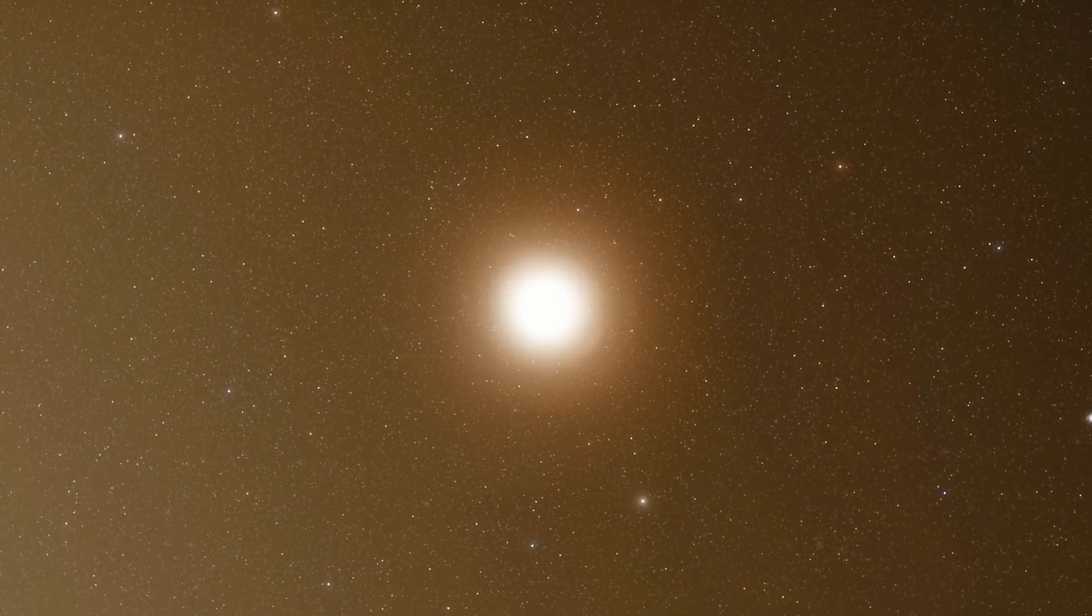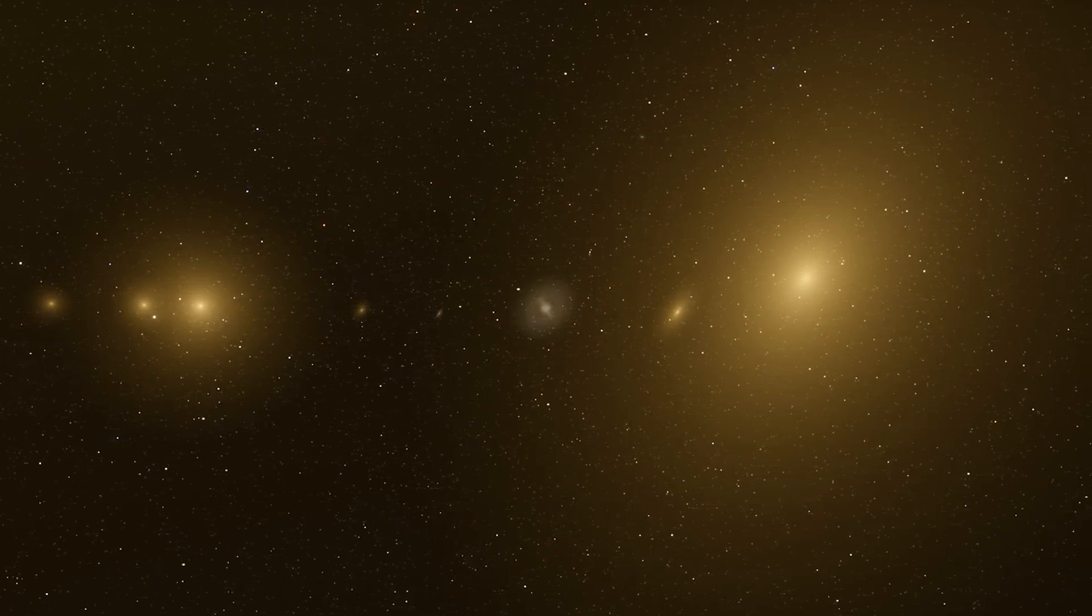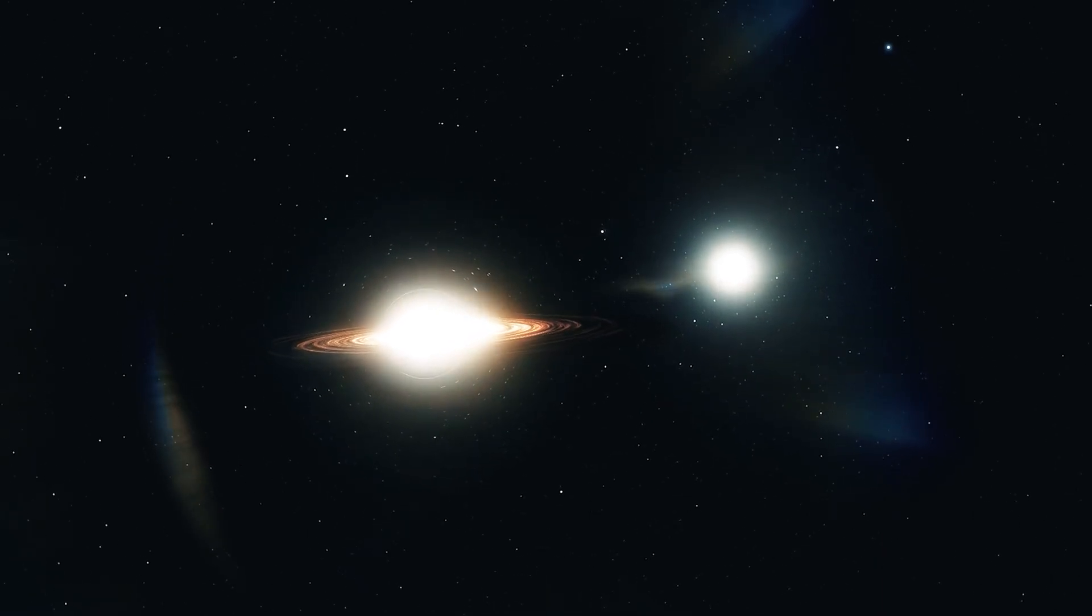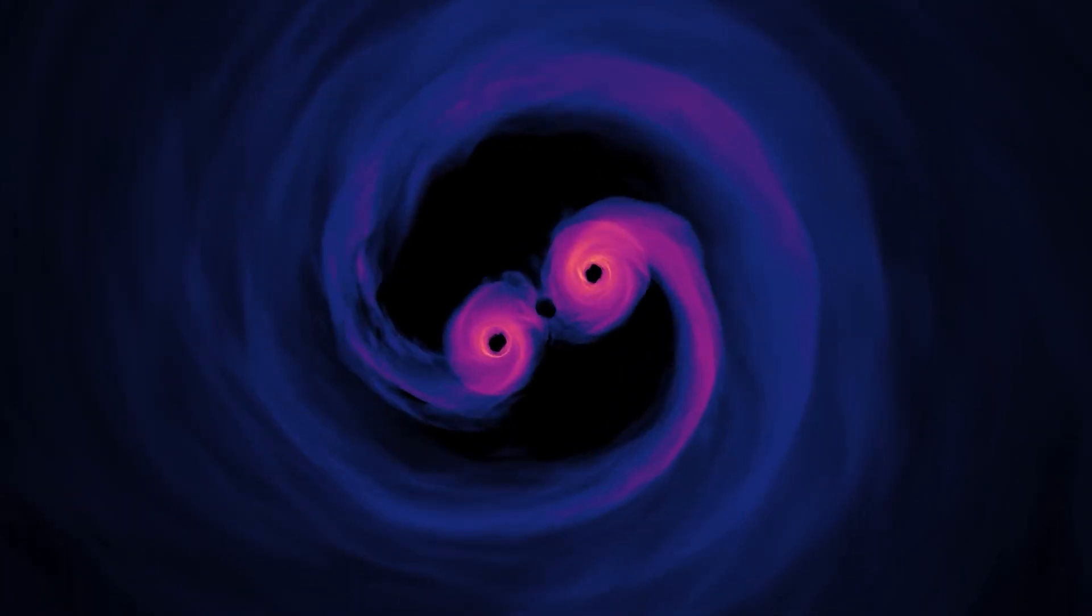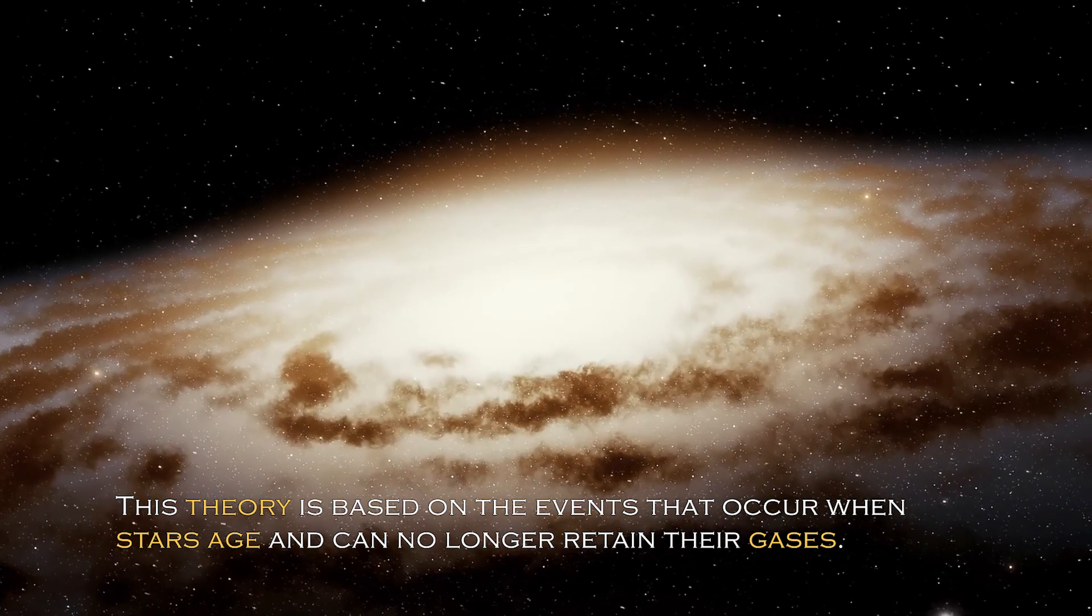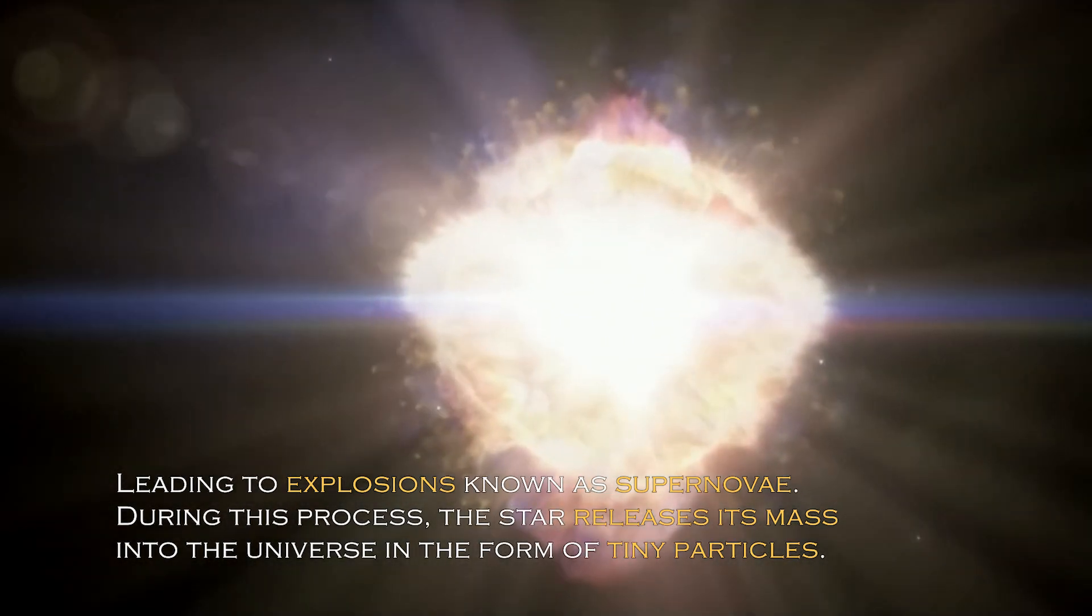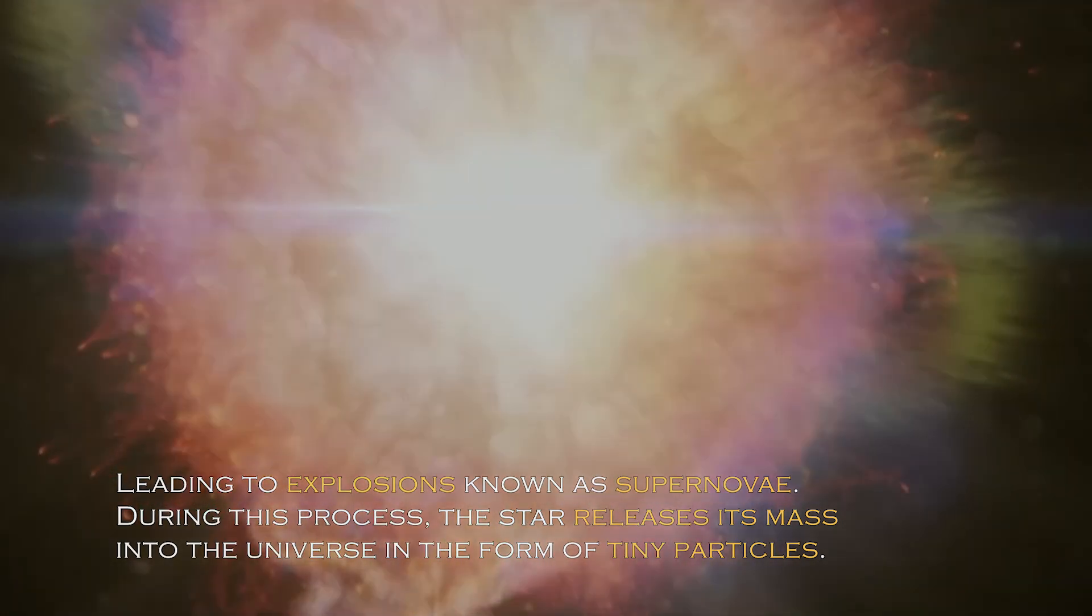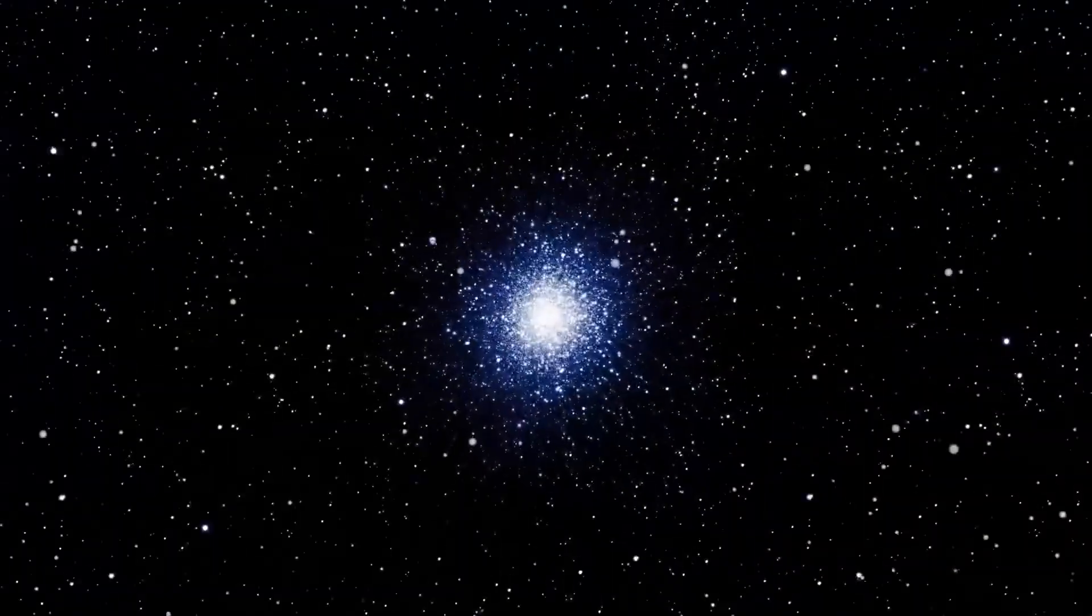Some experts have proposed a plausible theory that suggests that the disappearance of these solar systems involves a transformation of their mass. Specifically, these stars and planets could continue to exist in the cosmos in a form that we cannot currently detect. This theory is based on the events that occur when stars age and can no longer retain their gases, leading to explosions known as supernovae. During this process, the star releases its mass into the universe in the form of tiny particles. Some people argue that something similar may have happened to these solar systems that suddenly disappeared.